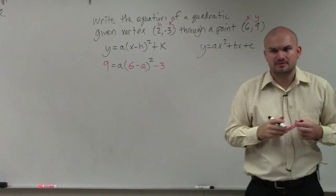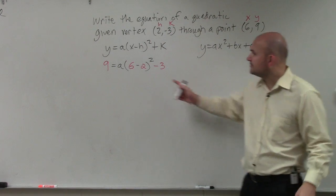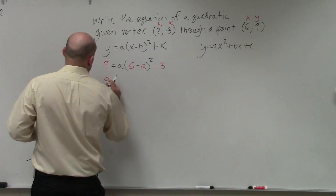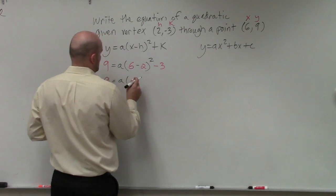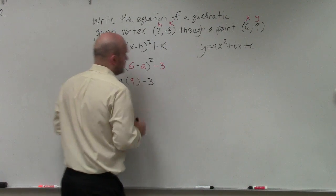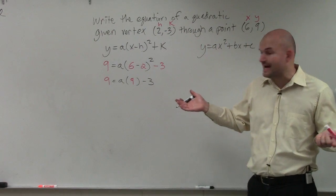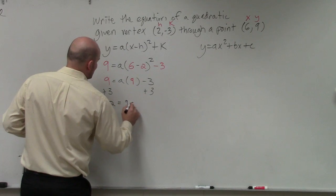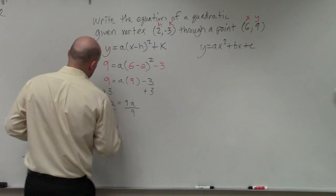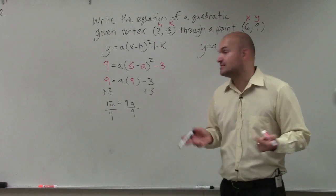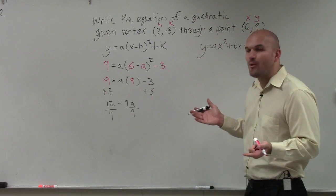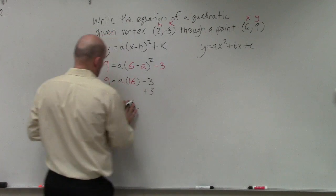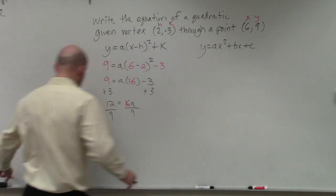Does everybody see what I did? Now we just go and simplify. 6 minus 2 is 4. 4 squared is 16. Then I just go ahead and solve for a now. Just add 3. So I have 12 equals 16a. Divide by 16. Still going to give us a fraction.